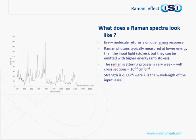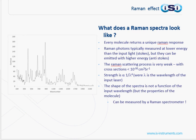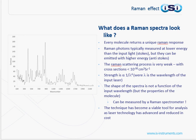However, other effects occur when you measure at shorter wavelengths — for example at 532 nm — such as fluorescence, which can contaminate the signal. The shape of the spectra is not a function of the input wavelength, but of the properties of the molecule itself, and it is this that can be measured by a Raman spectrometer. The technique has become a viable tool for analysis in recent years as laser technology has matured and dramatically reduced in cost.